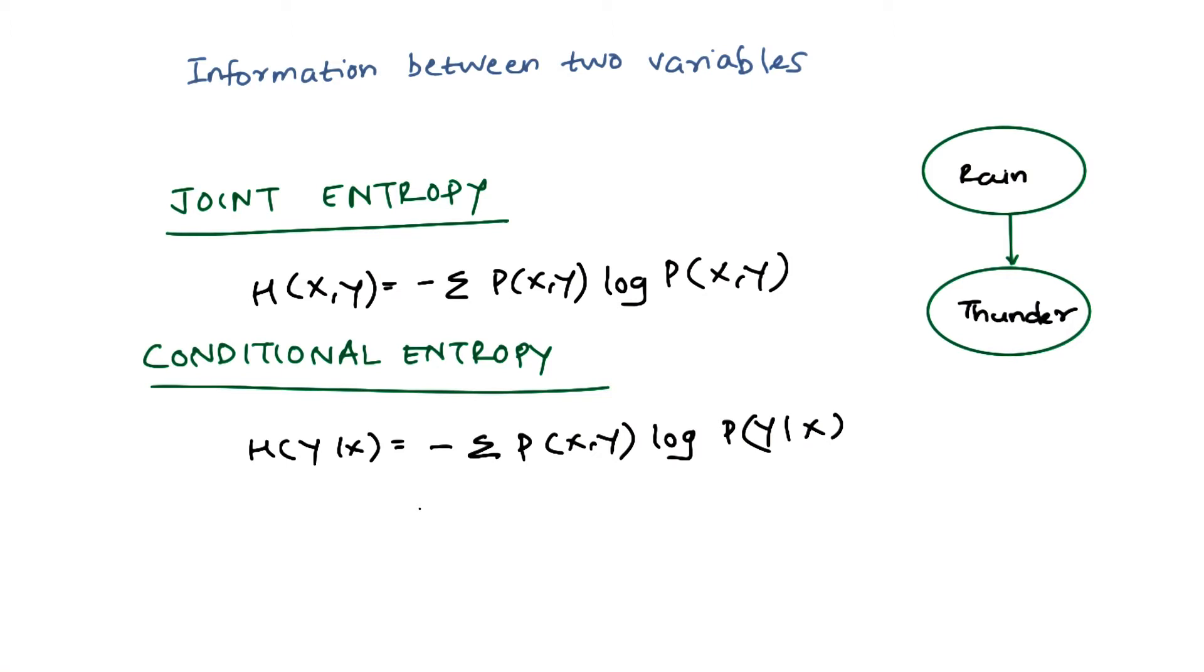If x and y are independent, then the conditional probability of y given x is just the conditional probability of y.